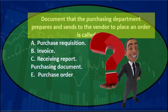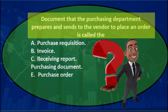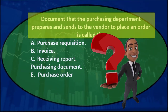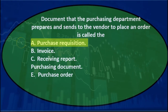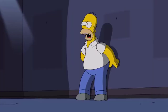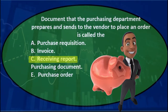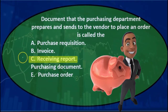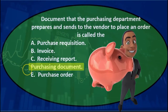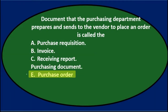The document that the purchasing department prepares and sends to the vendor to place an order is called the... A. Purchase requisition. B. Invoice. C. Receiving report. D. Purchasing document. Or E. Purchase order.